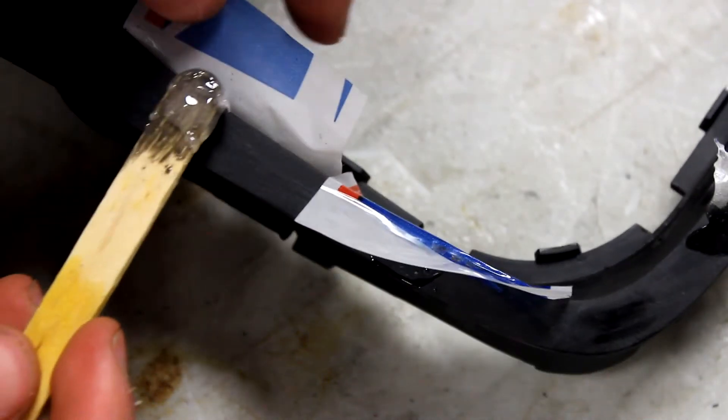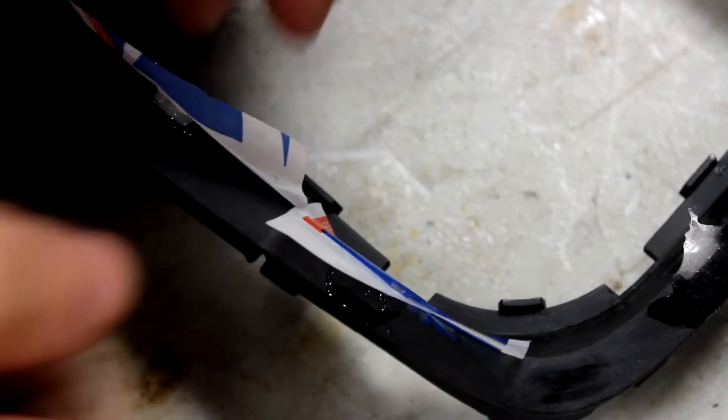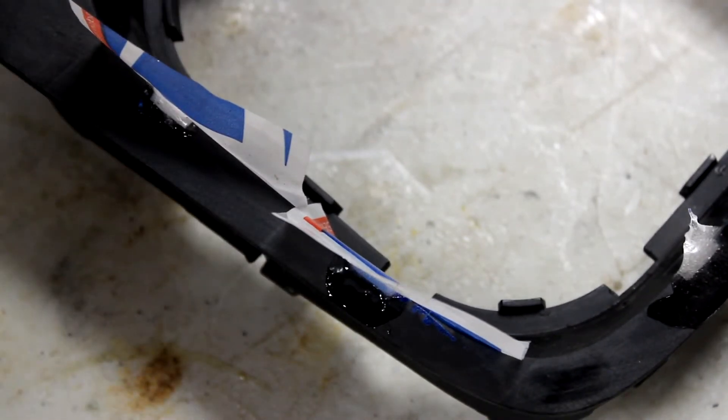Then I used some packing tape to help shape the epoxy while it dried. Let it dry in a way so that the epoxy overfills what you're trying to fill so that it could be sanded down.